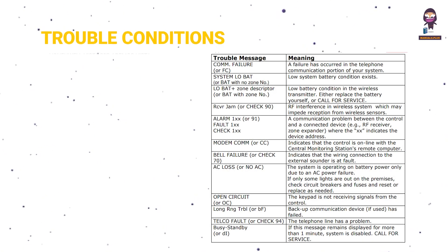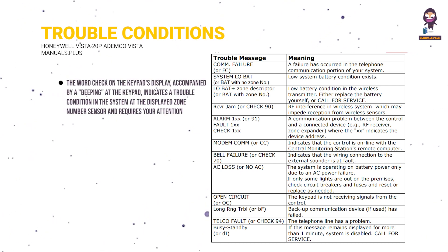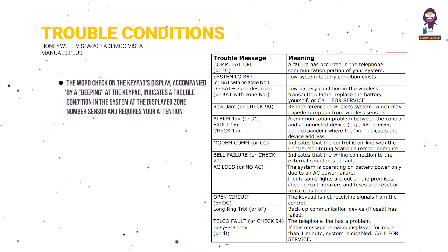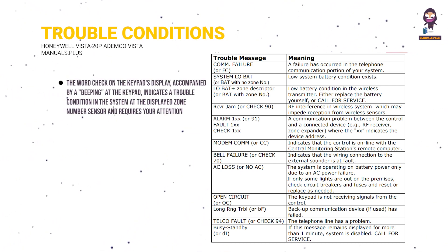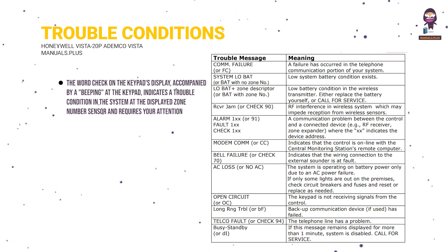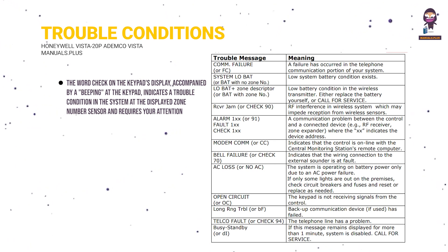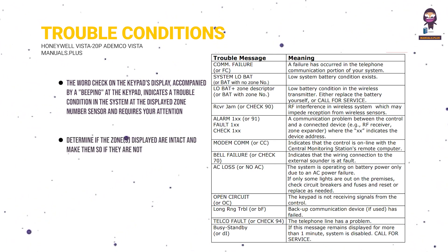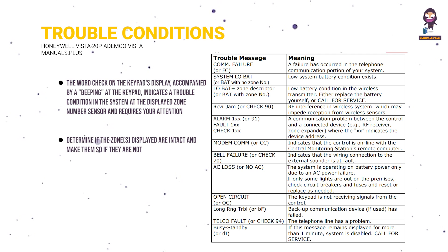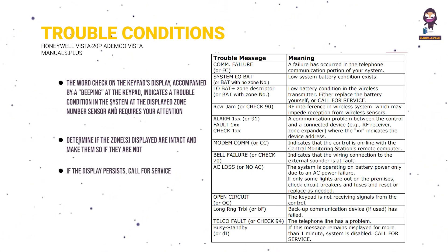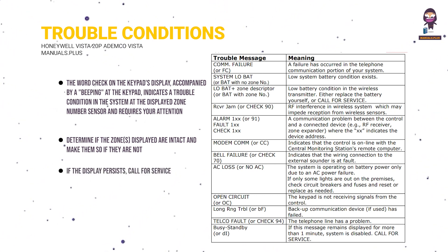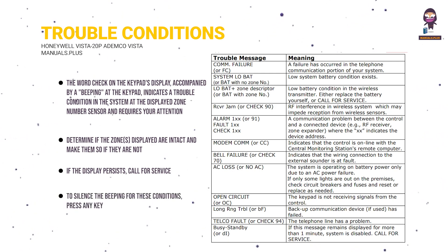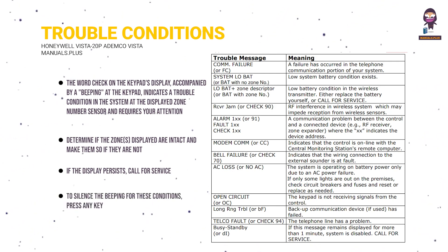Trouble conditions. The word 'check' on the keypad's display, accompanied by a beeping at the keypad, indicates a trouble condition in the system at the displayed zone number sensor and requires your attention. Determine if the zones displayed are intact and make them so if they are not. If the display persists, call for service. To silence the beeping for these conditions, press any key.